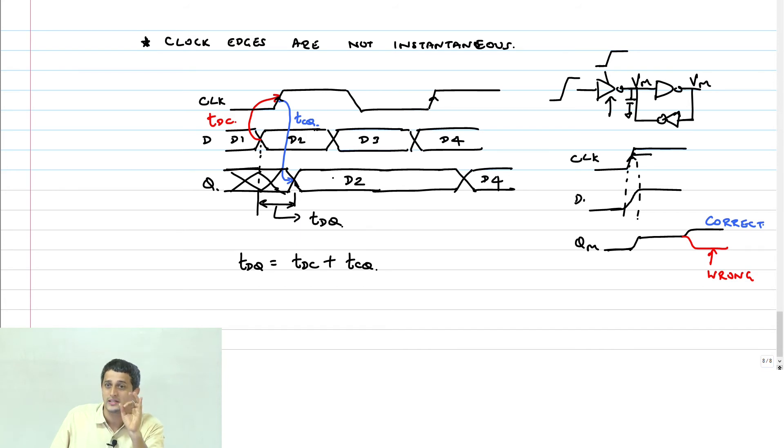That means, even though the setup time was correct, data could be sampled correctly by the flop, the clock to Q delay will go up significantly, because only if QM settles to the correct value will Q then reflect the right value out. That is what we are going to now exploit in order to give a very formal definition to setup and hold time.